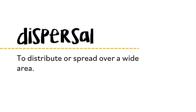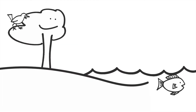Now you heard me use that term 'dispersal methods' when I introduced the three W's. But what does dispersal mean? Dispersal means to distribute or spread out over a wide area. If you can imagine blowing on a dandelion and watching all those little tufts take to the wind — that's a form of dispersal.